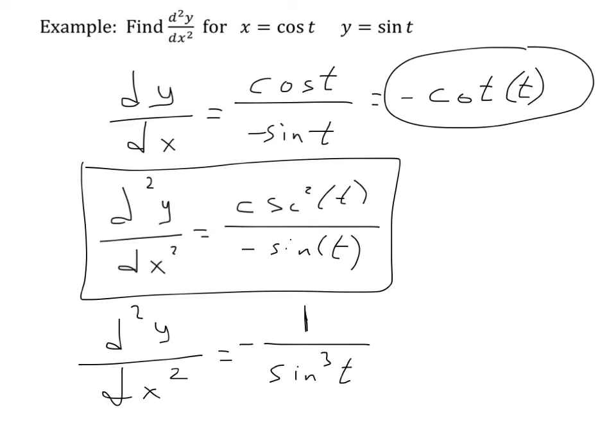So, we could write it that way. We could also write it as just negative cosecant cubed t. Any one of those things would work. So, we now have three possible answers for this problem.